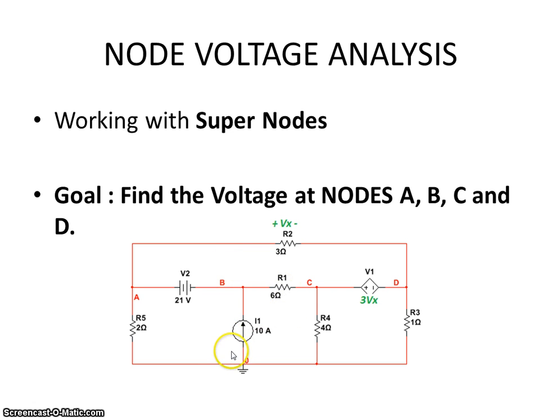And here, we'll work with something known as supernodes. A supernode is a situation in a circuit where a voltage source, for example, like this, has node A and node B on two sides of it.